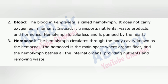2. Blood: The blood in Periplaneta is called haemolymph. It does not carry oxygen as in humans. Instead, it transports nutrients, waste products and hormones. Haemolymph is colorless and is pumped by the heart. 3. Haemocoel: The haemolymph circulates through the body cavity known as the haemocoel. The haemocoel is the main space where organs float, and it bathes all the internal organs, providing nutrients and removing waste.